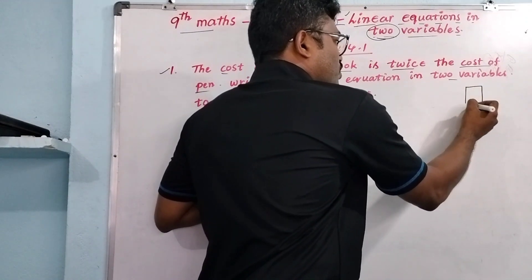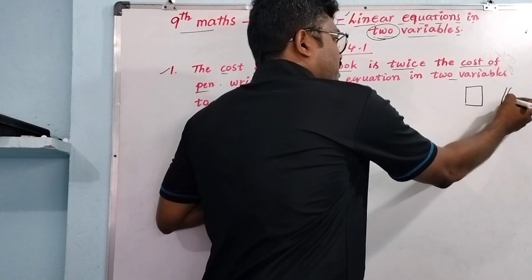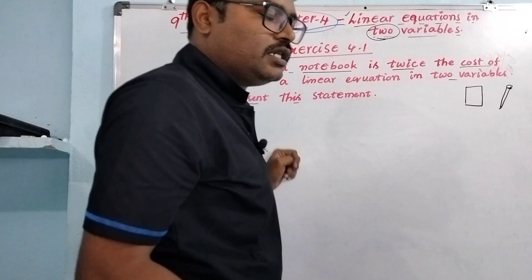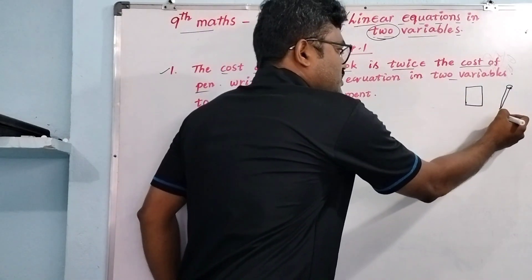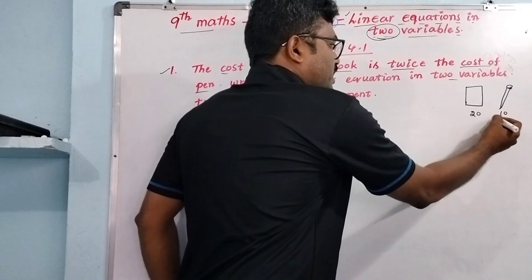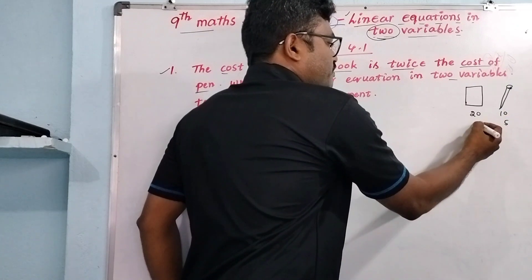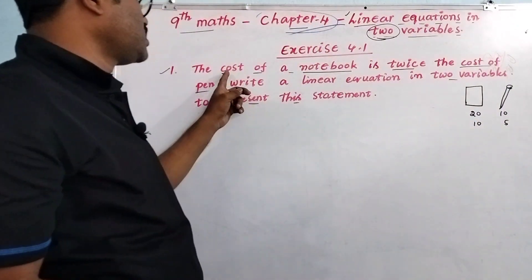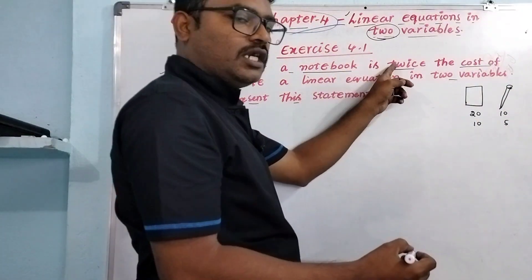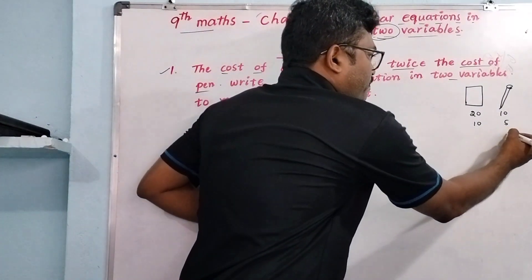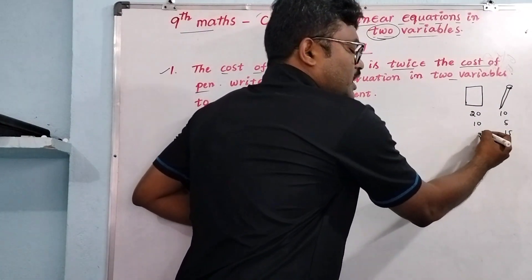Let this be the book and this is the pen. If the pen is 10 rupees, the book is 20. If the pen is 5 rupees, the book is 10 rupees because the cost of the notebook is twice, double. If the pen is 15, the book is 30.